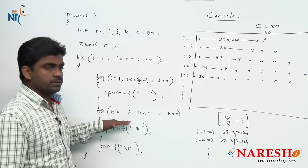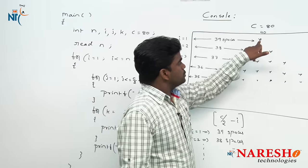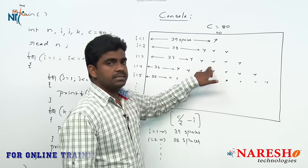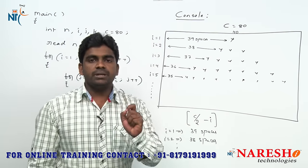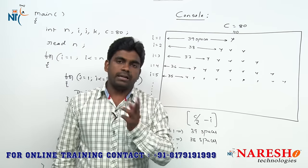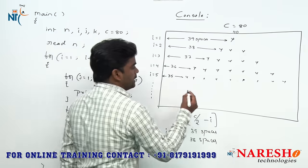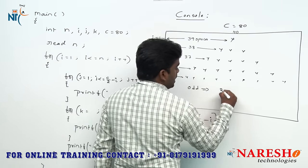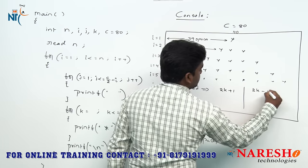Next is the stars printing logic. How to print stars? First 1 star, next 3 stars, next 5 stars, next 7 stars and 9 stars. That is simply an odd numbers logic. There are two odd number formulas: 2k plus 1, or 2k minus 1.